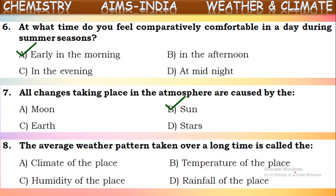Next question: the average weather pattern taken over a long time is called what? There may be changes in temperature, wind speed, and rainfall. If you take these reports for a long time in a particular place — around 20 to 30 years, approximately 25 years — and take the average of all those reports, that gives the climate of that place. This is called the climate.